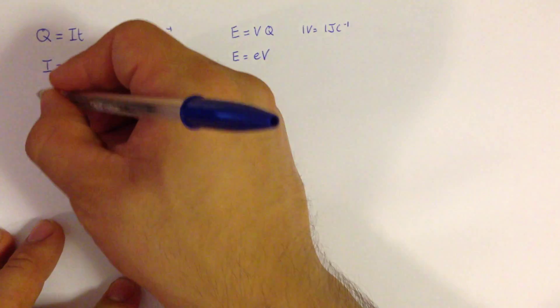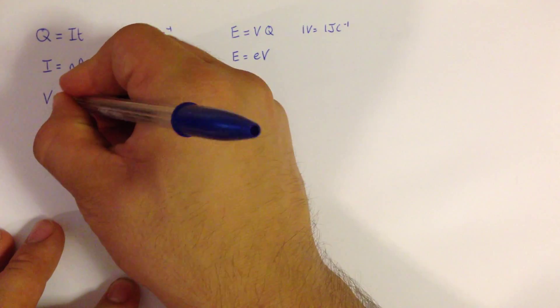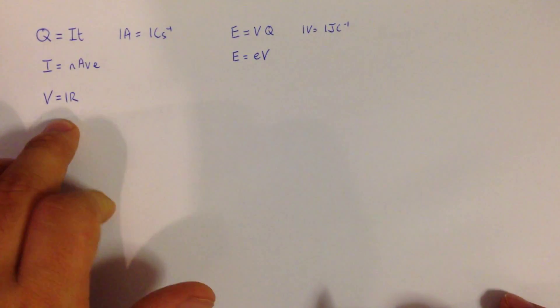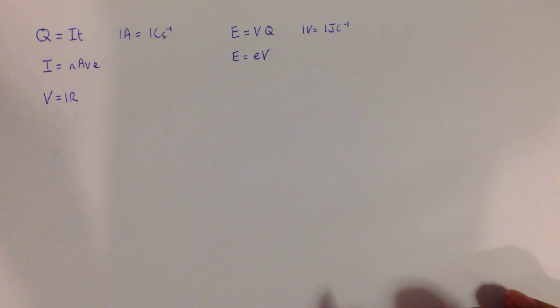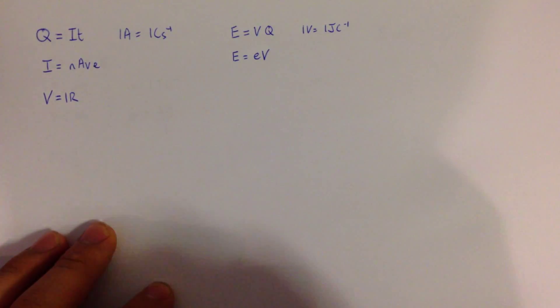The next equation is Ohm's law, which is VIR, or V equals IR. Now that equation is important because Ohm's law is that voltage is proportional to current when external conditions such as temperature remain constant. So that equation is going to be used a lot in your exam.